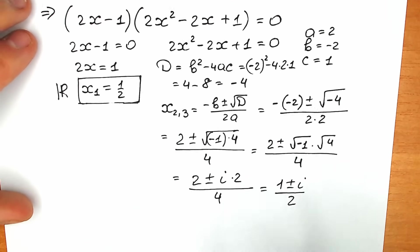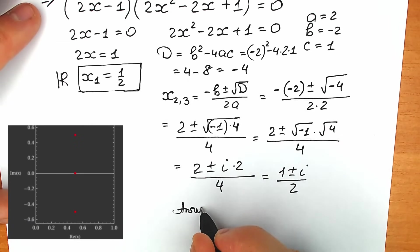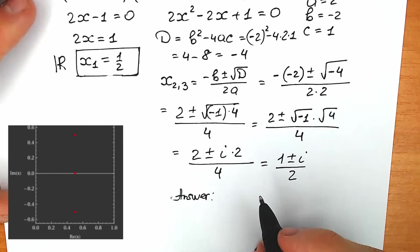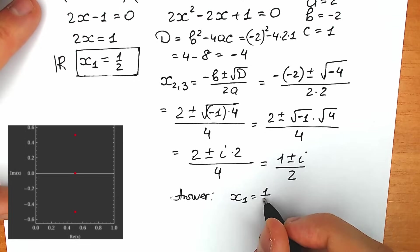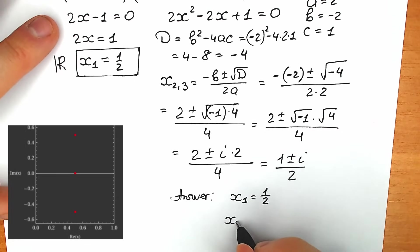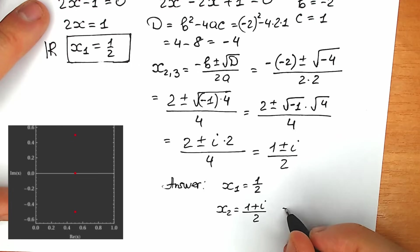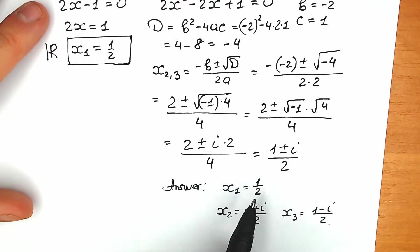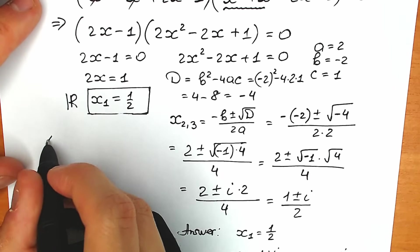So we find two complex roots. Our final answers: x₂ equals 1 plus i over 2, and x₃ equals 1 minus i over 2. After the answer, I want to mention a few really important points, because a lot of students forget about them and solve this question completely incorrectly because of this.